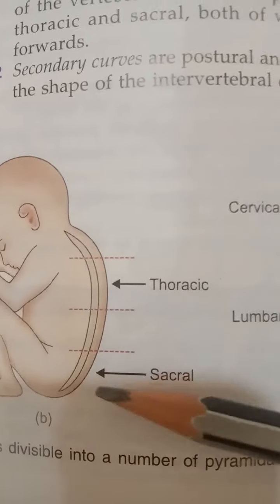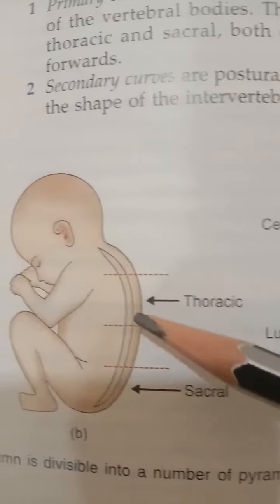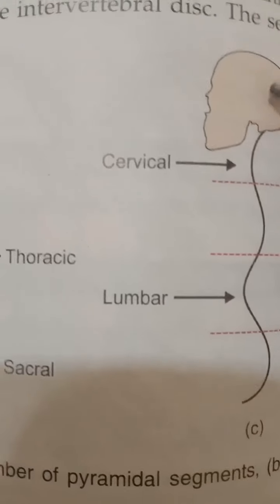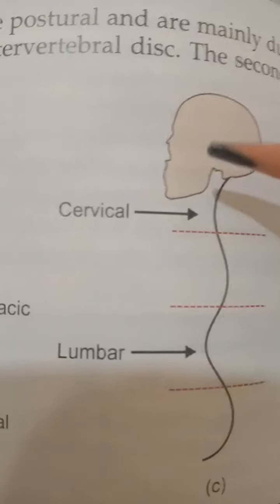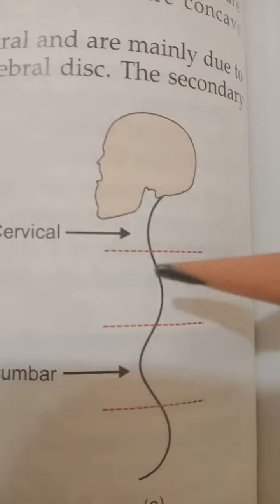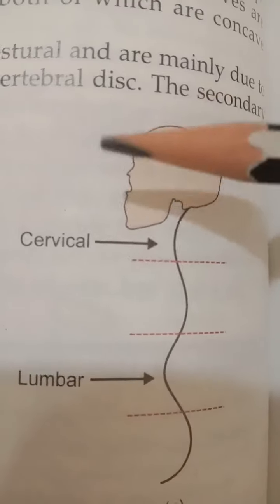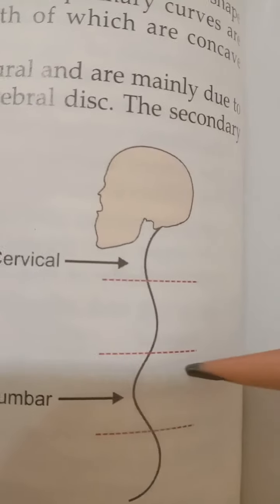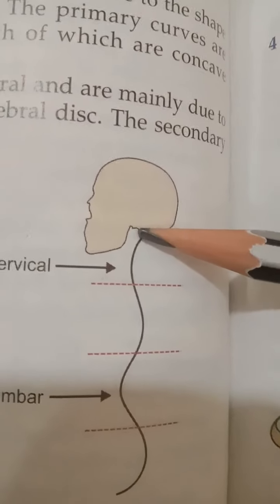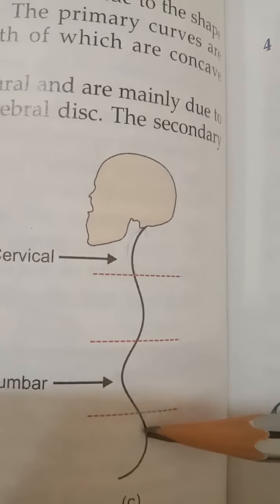The thoracic region is anteriorly concave and the sacral region is anteriorly concave. The secondary curvature is postural and is mainly due to the shape of the intervertebral disc. The secondary curvature occurs in the cervical region and the lumbar region, and both are convex forward.